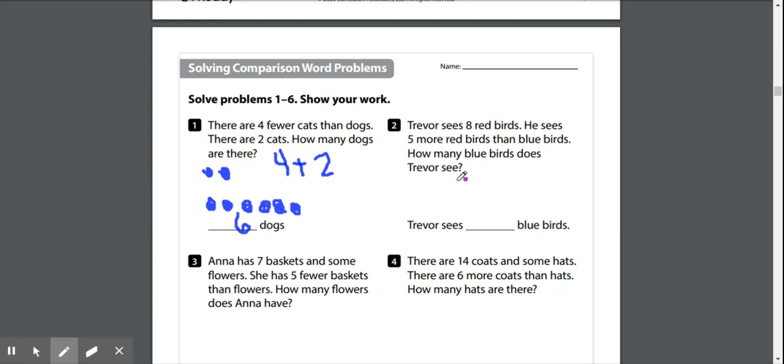So we have eight red birds. One, two, three, four, five, six, seven, eight, and we know that there are five more red birds than blue birds, so we have one, two, three, four, five. I'm going to circle these.